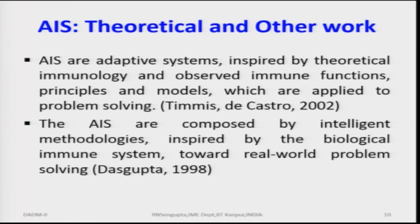With this brief background on the immune system, the artificial immune system (AIS) is an adaptive system inspired by theoretical immunology and observed immune functions. Key researchers in this area include Timmis and De Castro, and Dasgupta, who defined AIS as intelligent methodologies inspired by the biological immune system applied to real-world problems. This concludes the 54th class; we will discuss AIS further in the 12th week — the last week — including a simple example of how it can be applied in finance and operations research. Have a nice day and thank you very much.